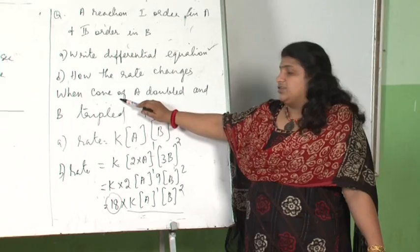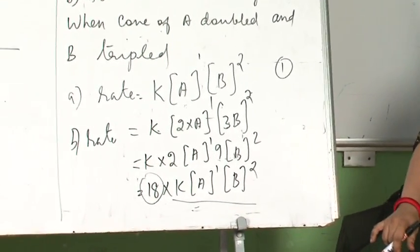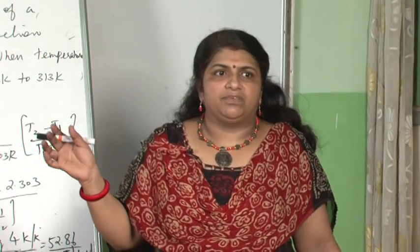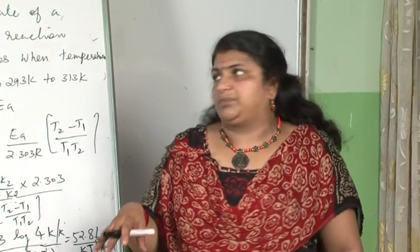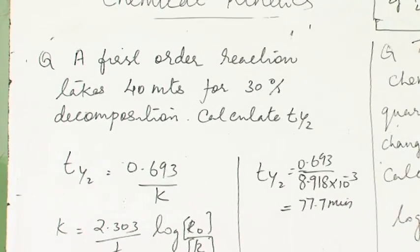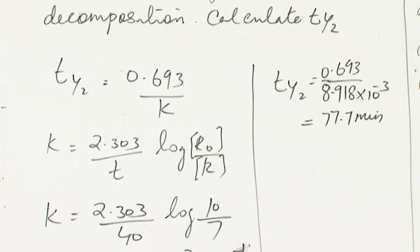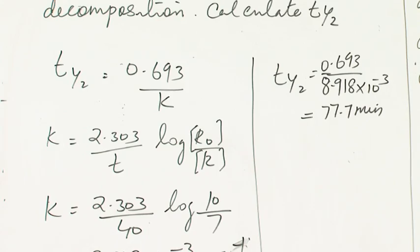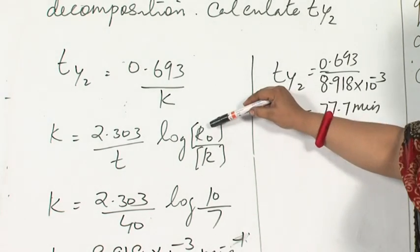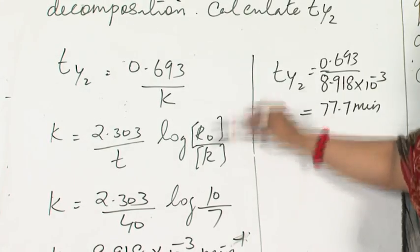Similarly, if both A and B concentrations are doubled, A becomes 2A and B becomes 2B. Another frequently asked question: a first-order reaction takes 40 minutes for 30% decomposition. Using K = 2.303/t · log(R₀/R), and t½ = 0.693/K. If initial concentration is 100 and 30% decomposition has occurred, then R = 70 remains after time t.